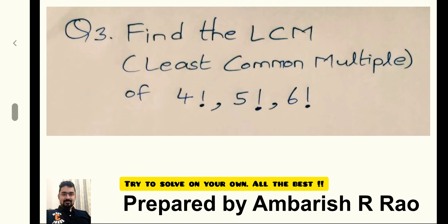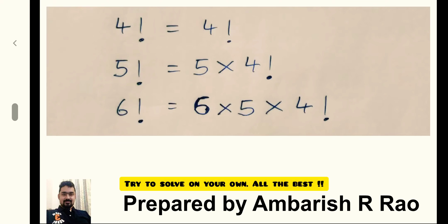Find the least common multiple of 4 factorial, 5 factorial, and 6 factorial. 4 factorial, let's leave it as 4 factorial. 5 factorial is equal to 5 into 4 factorial, and 6 factorial is equal to 6 into 5 into 4 factorial.